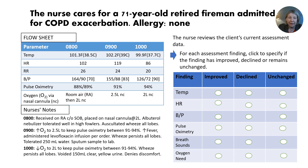Let's go to our right panel and see what the test question is. The nurse reviews the client's current assessment data — that's what we had just done. For each assessment finding, click to specify if the finding has improved, has declined, or remains unchanged. So we're thinking about our 1000 data: temperature has changed, heart rate changed, respiratory rate changed, blood pressure changed, saturations changed, and oxygen has changed.